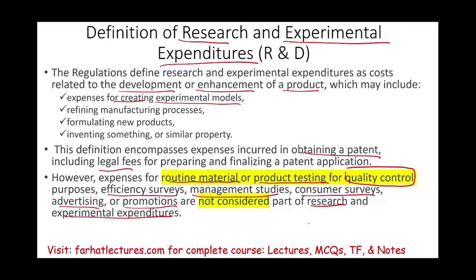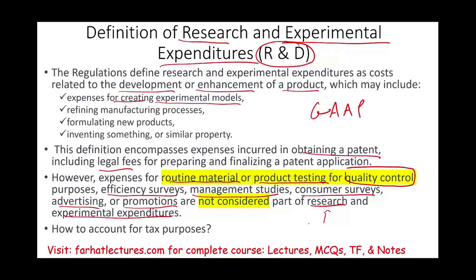Just be careful in case you see a multiple choice question — those items are not considered part of research and experimental expenditure. Now we need to learn how to account for these for tax purposes, because you need to know how to account for R&D, which is research and experimental expenditure for GAAP. It's very important that you understand we have different rules between IRS and GAAP, and this is an example of it. The rules for research and development between FAR and GAAP and IRS are getting a little more similar, but they used to be quite different.